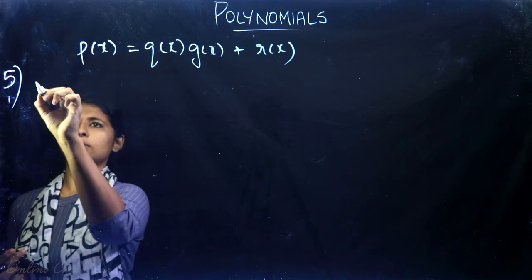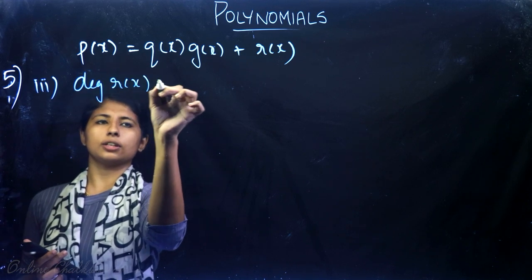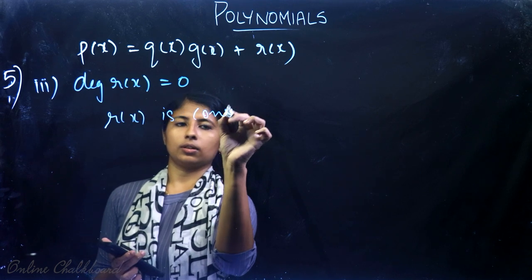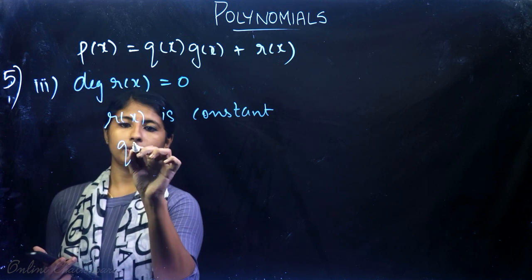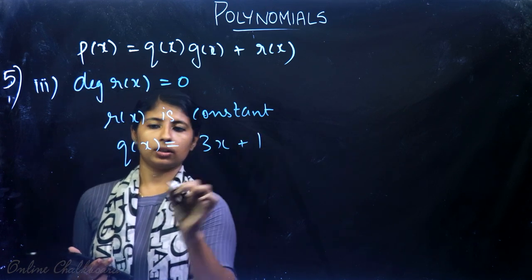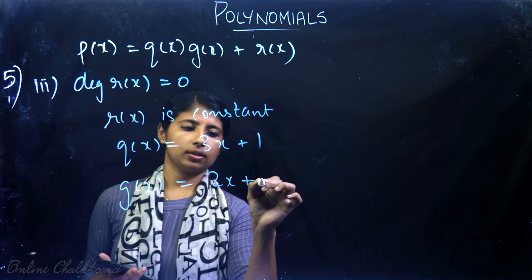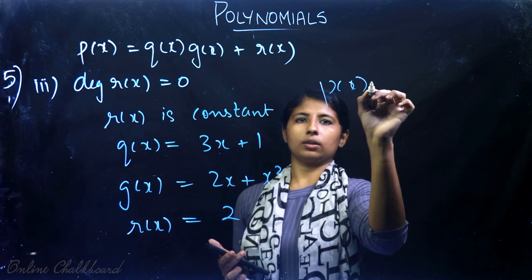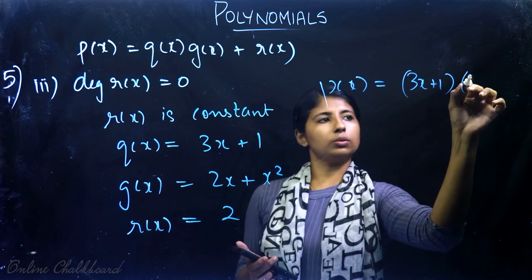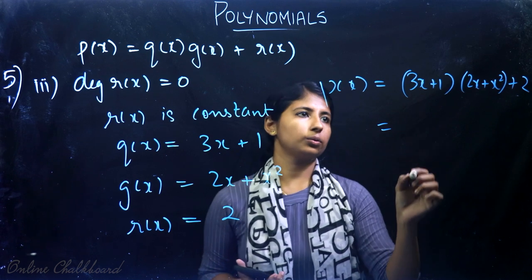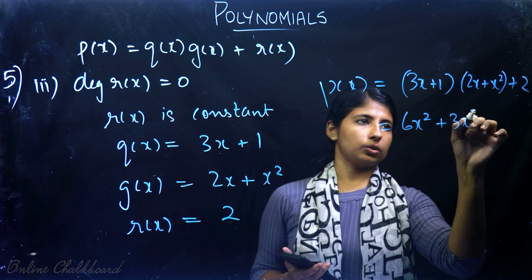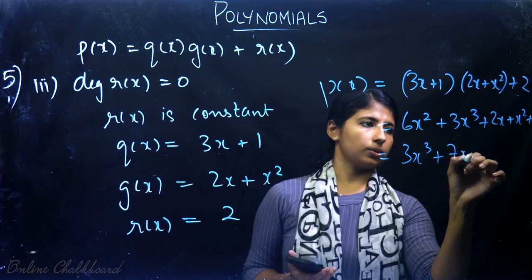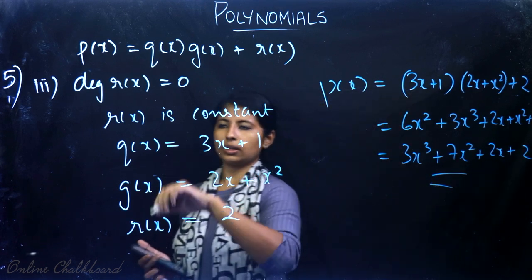The third part asks for degree of R(x) equal to 0, meaning R(x) is a constant. Take Q(x) = 3x + 1, G(x) = x² + 2x, and R(x) = 2. Then P(x) = (3x + 1)(x² + 2x) + 2 = 3x³ + 6x² + x² + 2x + 2 = 3x³ + 7x² + 2x + 2. This gives a random example where degree of R(x) = 0.